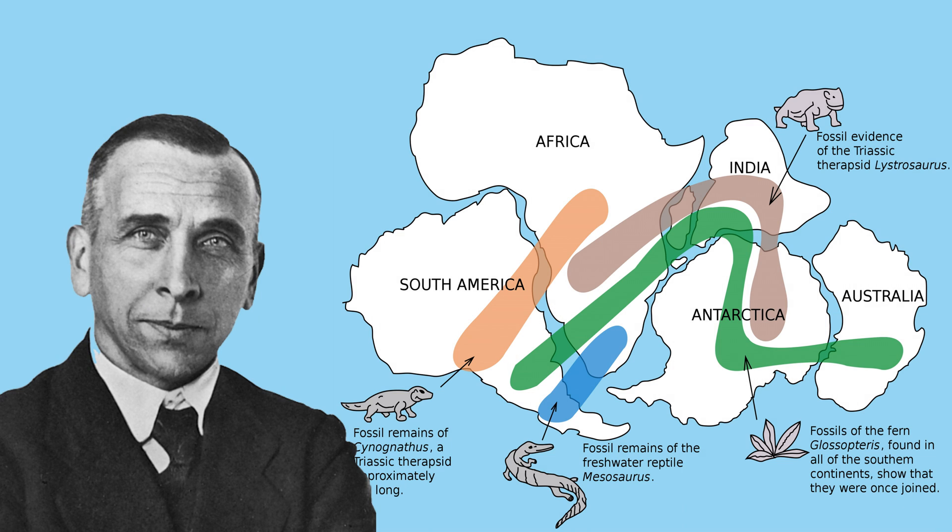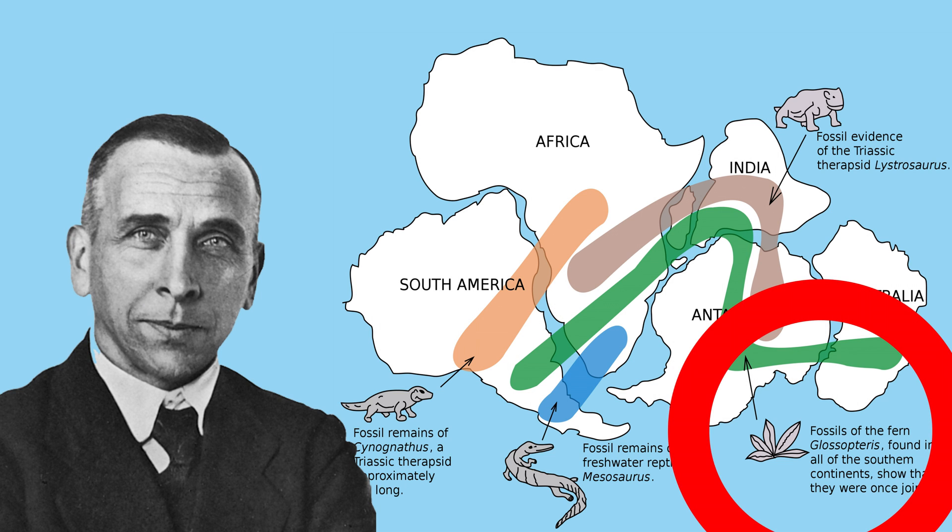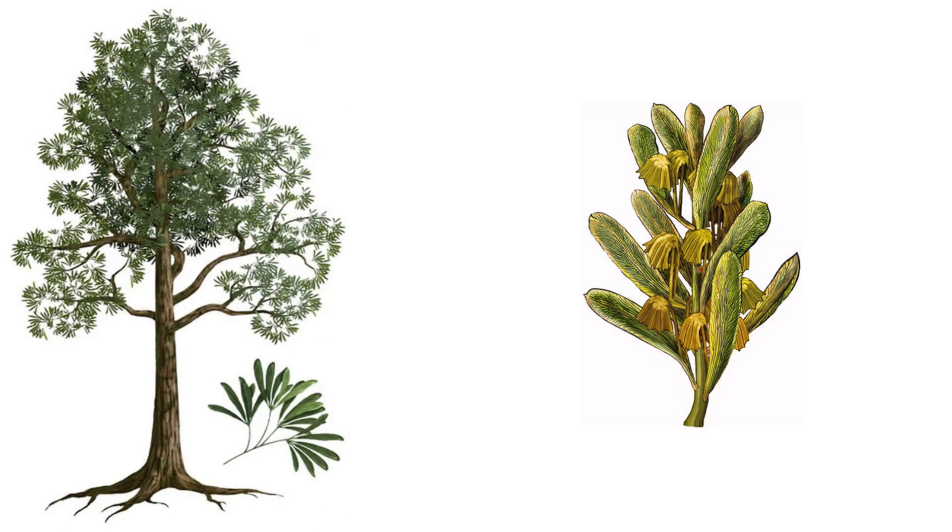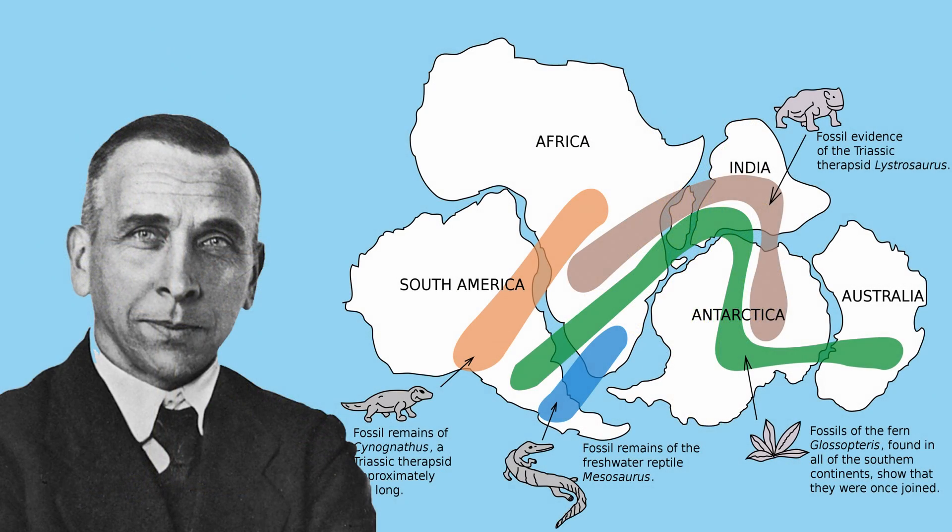He also discovered fossils of Glossopteris, a large extinct tree that had existed about 250 million years ago. It had large, heavy seeds. It was impossible for the wind to carry them thousands of kilometers away. But things got even more complicated when he discovered that seeds had also been found in Madagascar, India, Antarctica, and Australia.